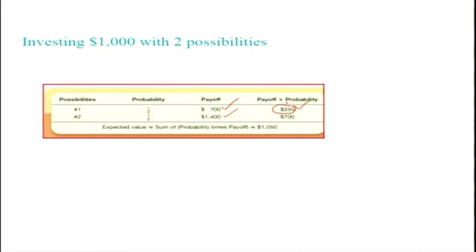In possibility two, when the stock price increases the payoff is $1,400 and the probability of getting that outcome is also 0.5. The expected value of the investment is the sum of probability times payoff — adding both terms gives us $1,050. That is the expected value of the investment from this scenario.